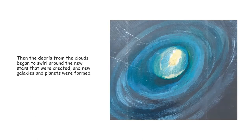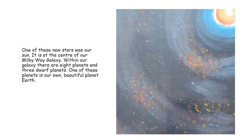Then, the debris from the clouds began to swirl around the new stars that were created, and new galaxies and planets were formed. One of these new stars was our sun. It is at the center of our Milky Way galaxy. Within our galaxy, there are eight planets and three dwarf planets. One of these planets is our own beautiful planet Earth.